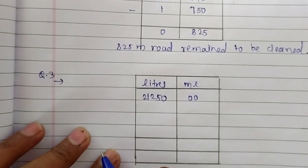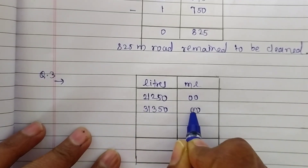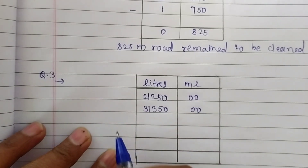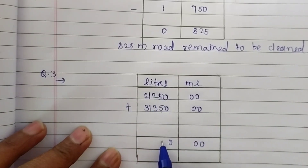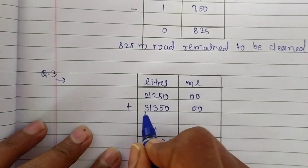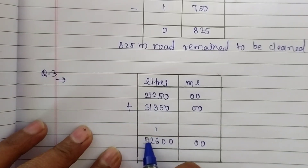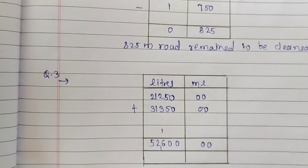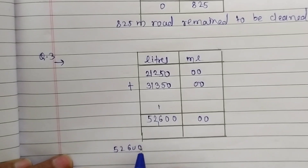Adding the two values: 0 plus 0 is 0 in the milliliter column. For the liters: 5 plus 5 is 10, carry 1; 2 plus 3 plus 1 carried is 6; 2 plus 1 is 3; 1 plus 1 is 2; making the answer 52,600 liters. A total of 52,600 liters of treated waste water was used.